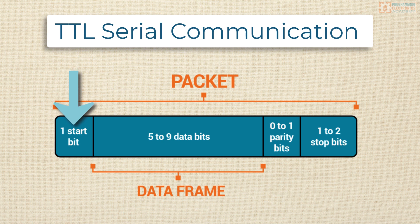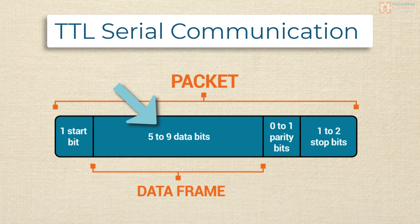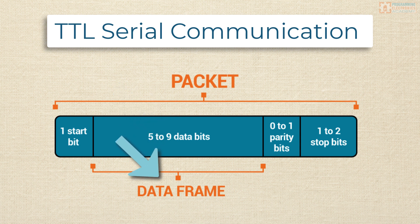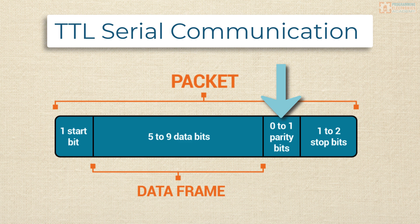The serial communication protocol goes something like this. First, you send a start bit, which is low, basically saying 'hey, I'm getting ready to send a message.' Then you send a set number of bits, which is often eight — this is your message, also known as the data frame. After the data frame, you can send an optional parity bit, which is used for error checking.